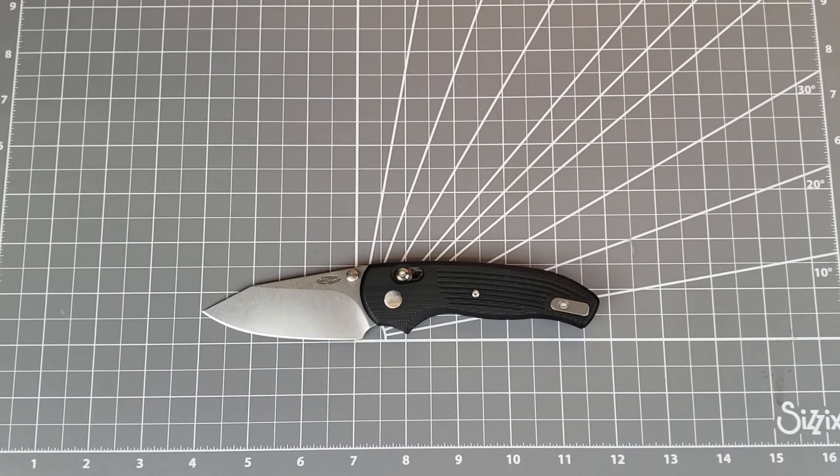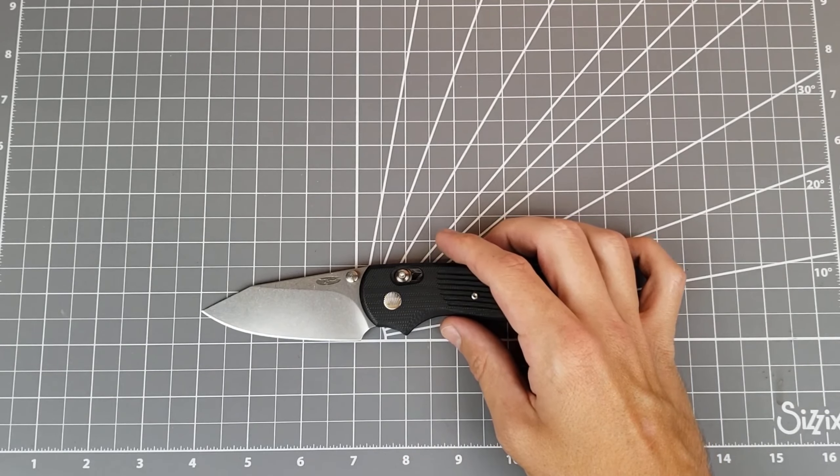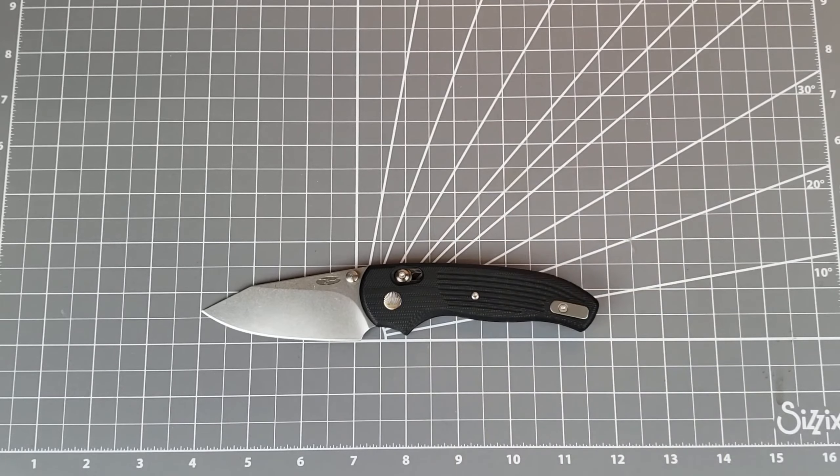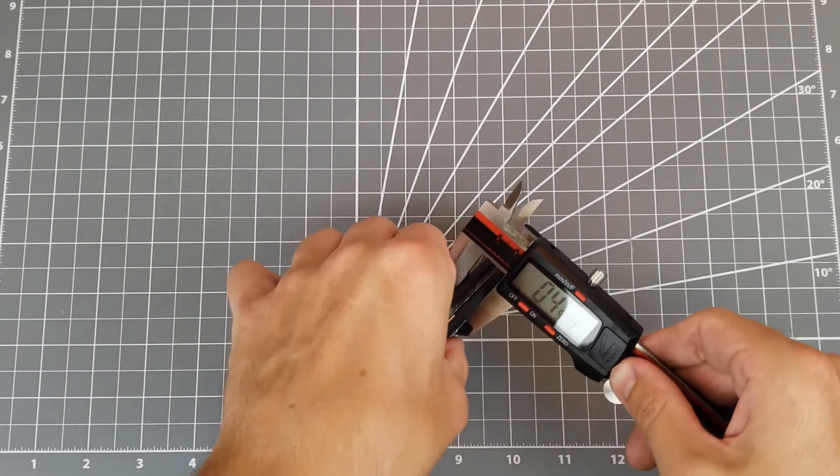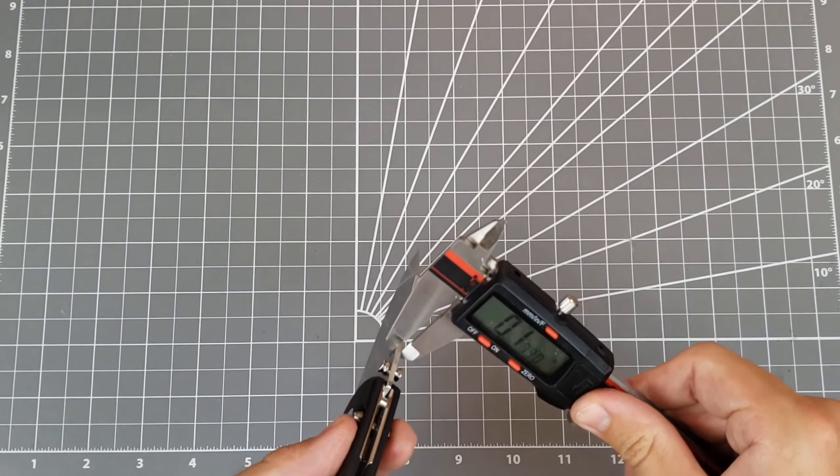Looking at overall length, it's about seven and three quarter inches. Blade length is coming in three and an eighth, something like that, and then cutting edge is about the same, three and an eighth or so. Handle thickness, looking at 0.49, pretty normal, pretty average.